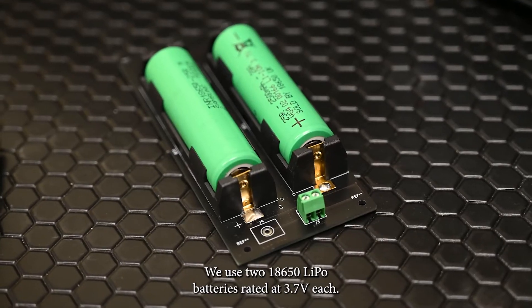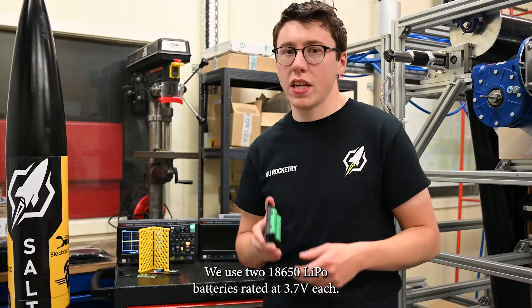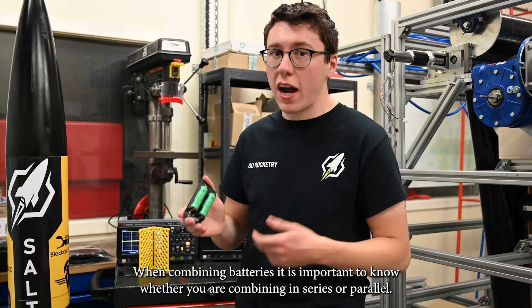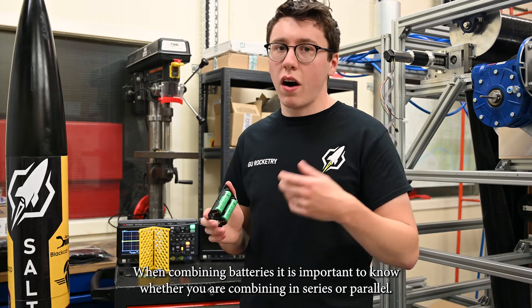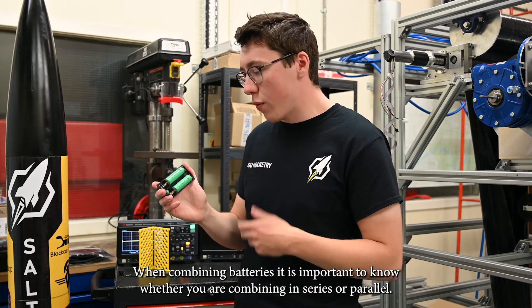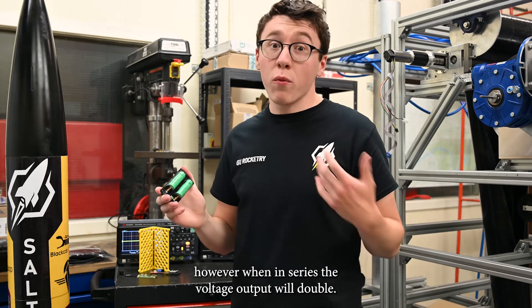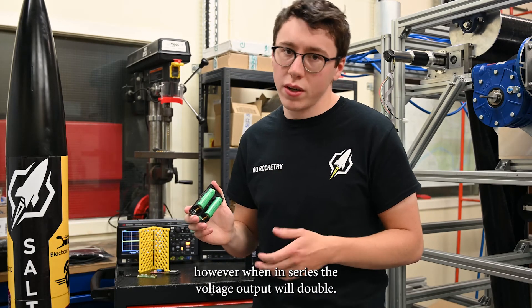We use two 18650 batteries rated at 3.7V. When combining batteries, it's important to consider how you do it. Are we in series or are we in parallel? When in parallel, the current and capacity will double, while when you're in series, the voltage output will double.